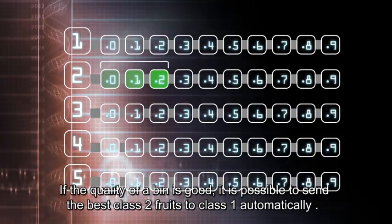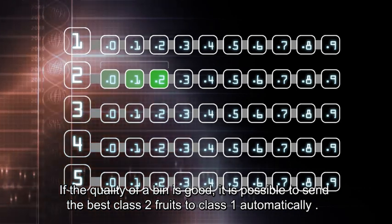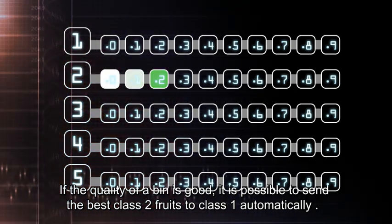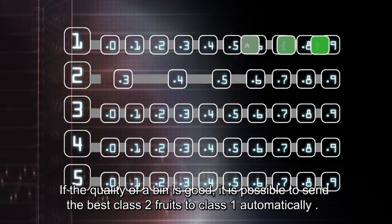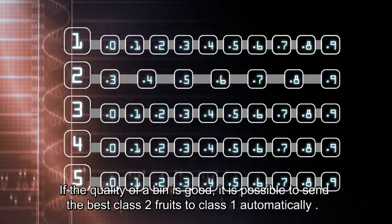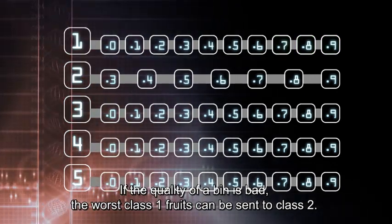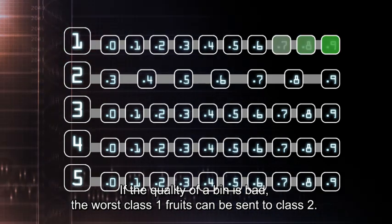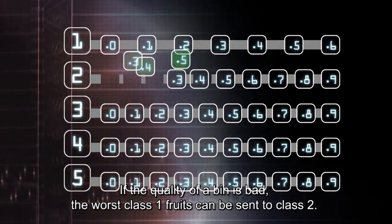If the quality of a bin is good, it is possible to send the best class 2 fruits to class 1 automatically. If the quality of a bin is bad, the worst class 1 fruits can be sent to class 2.